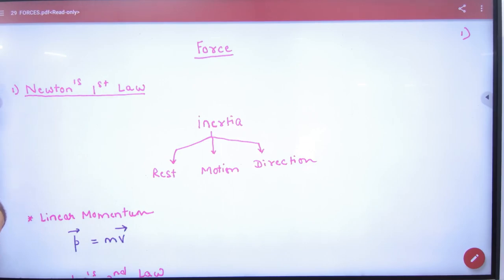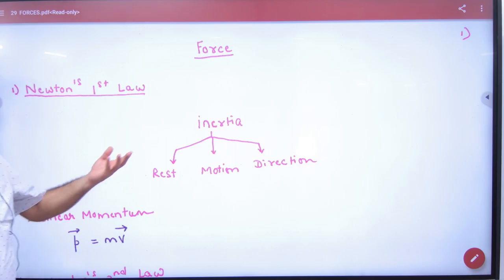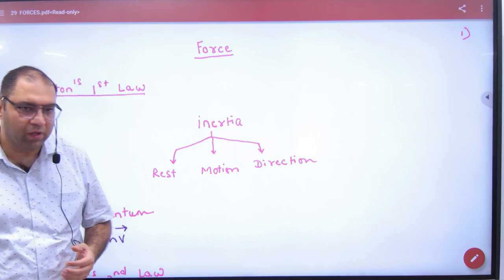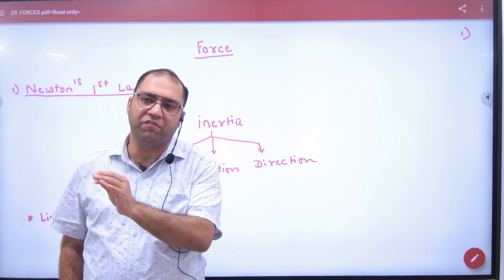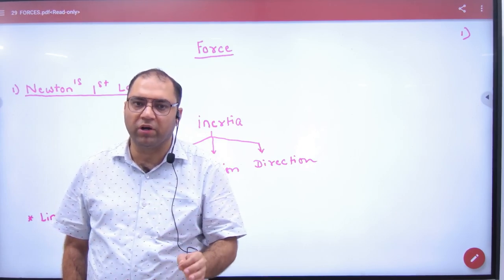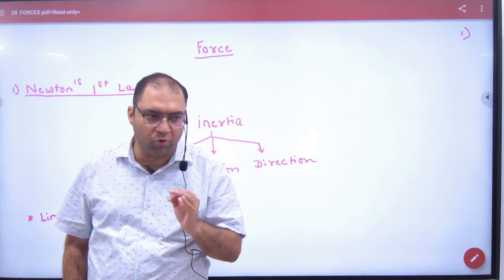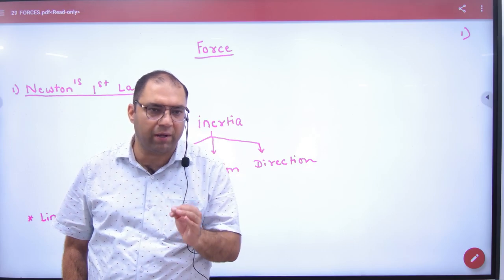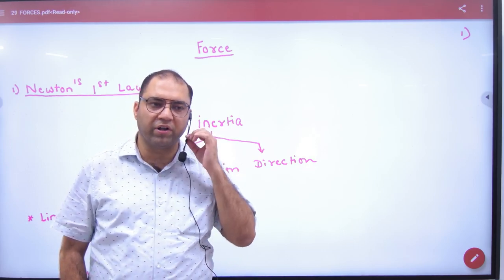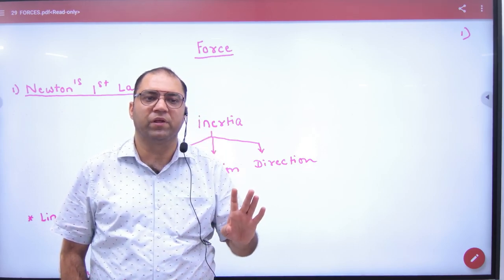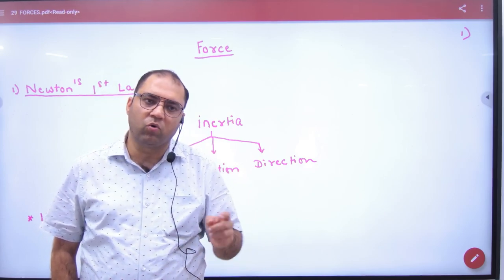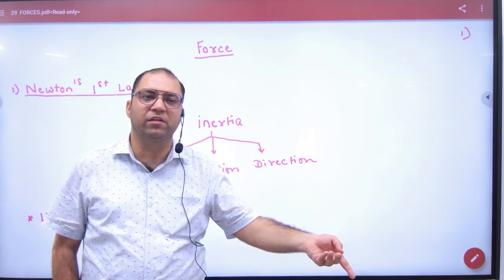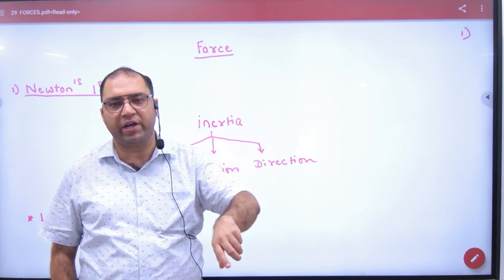When Newton's first law is studied, there is a term called inertia. Inertia is the inability of a body to change its state of rest or motion. If any body is at rest, it will remain at rest until force moves it. If any body is in motion, it will remain in motion until force stops it.